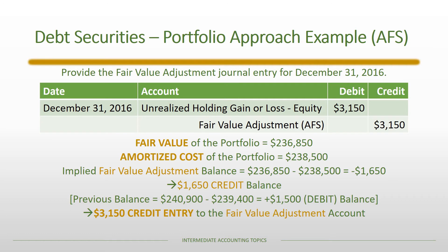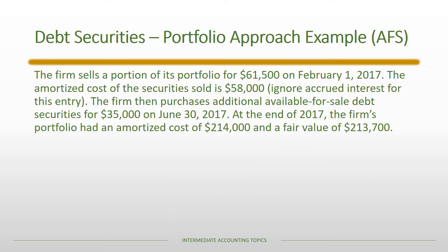Continuing into 2017: the firm sells a portion of its portfolio for $61,500, and the amortized cost of the securities sold was $58,000. We'll ignore accrued interest to keep the example simple. The firm then purchases additional available-for-sale debt securities for $35,000 on June 30th, 2017. We're also given the amortized cost and fair value of the portfolio at the end of 2017.